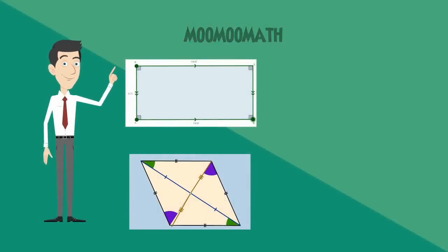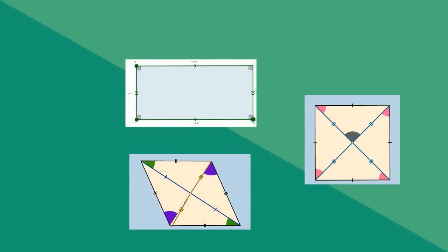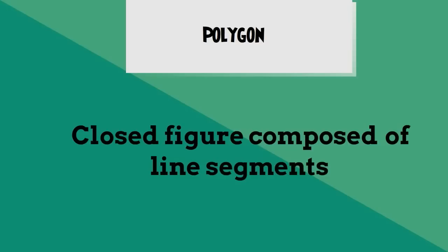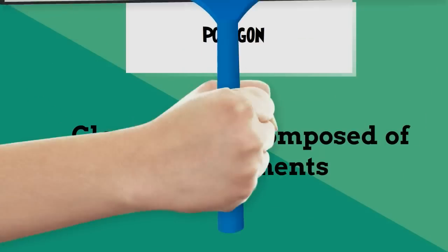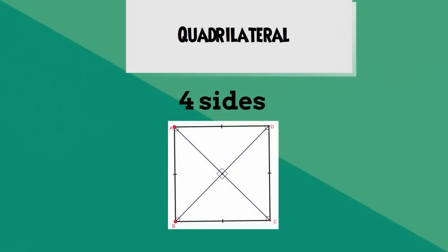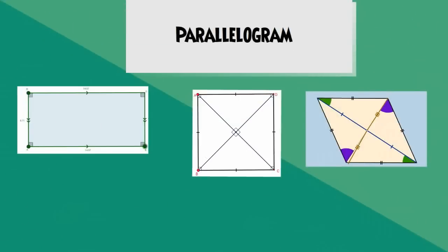Rhombuses and squares — each of these are plain two-dimensional shapes. Let's look at some of the properties of each of these shapes. Each of these shapes are considered to be a polygon, which is a closed figure composed of line segments. They also are considered to be quadrilaterals, which means they each have four sides. They also are all parallelograms, which means they have opposite sides that are parallel.